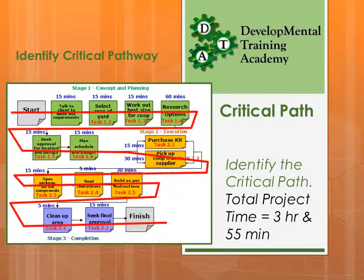From there you identify the critical pathway. The critical pathway is the shortest amount of time in which you can complete your project. Anything in series is always part of the critical path because you can't compress that part — one thing leads to the next. Where there are parallels, such as at the start of stage 2 with tasks 2.1 and 2.2, the first is 15 minutes and the second is 30 minutes. You can shift the 15-minute one around but you can't compress 30 minutes, so the critical path goes through the 30-minute component. Task 2.1 is not part of the critical path but 2.2 is, and the rest continues as series. Adding up all the times on the critical path, the total is 3 hours and 55 minutes.